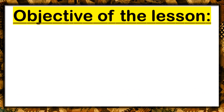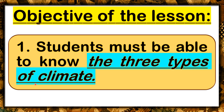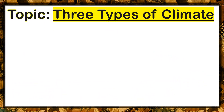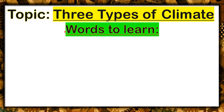For our objective of the lesson for today, students must be able to know the three types of climate. So at the end of our online learning discussion, I hope that you already know about the three types of climate and the differences of these three. Please repeat after me so you can practice your reading and speaking skills even if you're just at home.